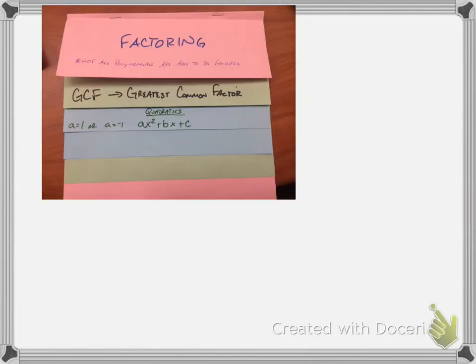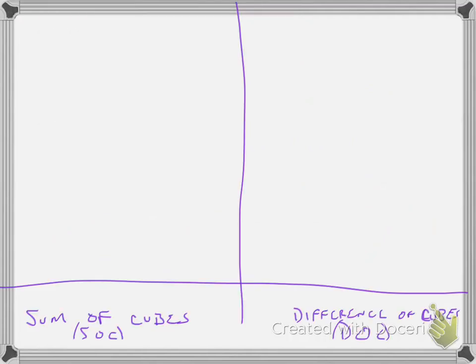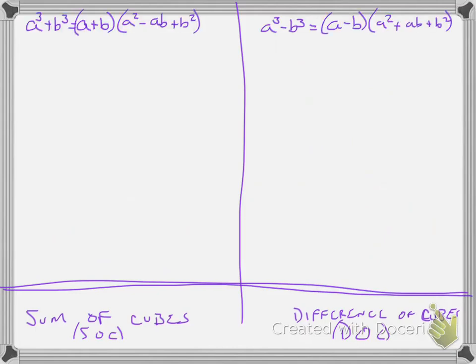Get out your factoring foldable — this is going to be on the last tab. It's split into two, and the bottom section should show the sum of cubes and difference of cubes, which we'll abbreviate SOC and DOC. I'm going to give you the rules first and then do a couple of examples on each. The sum of cubes is when you have two cubes being added; the difference of cubes is when you have two cubes being subtracted.